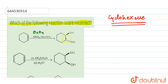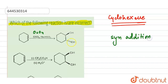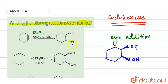In the first reaction, cyclohexene reacts with osmium tetroxide (OsO4) in the presence of NaHSO3. This gives syn addition, which means we get the formation of a cis diol. However, the reaction shown gives a trans diol, so this reaction is incorrect — it will be part of our answer.